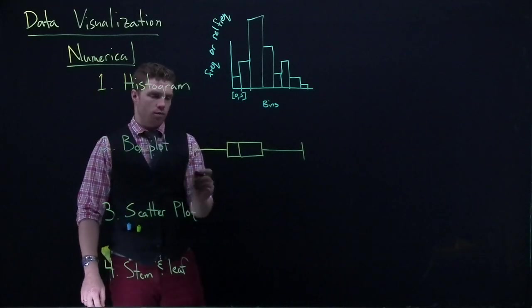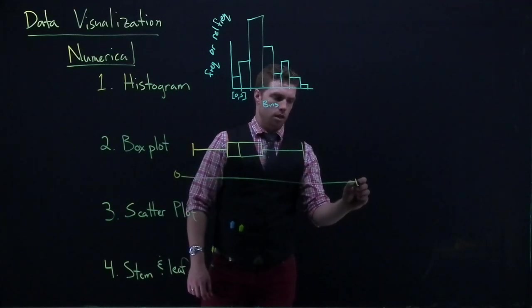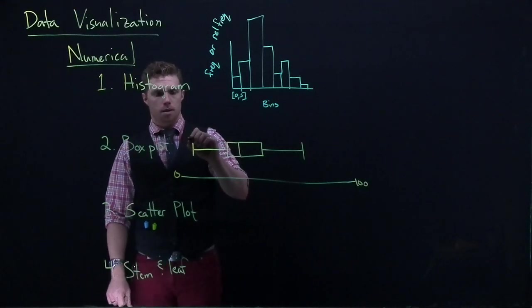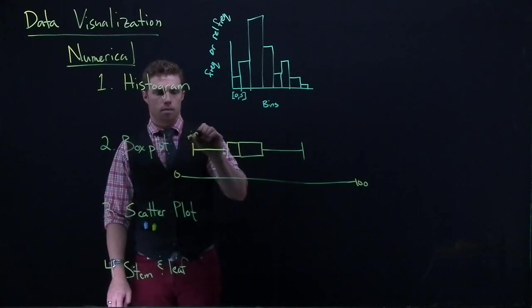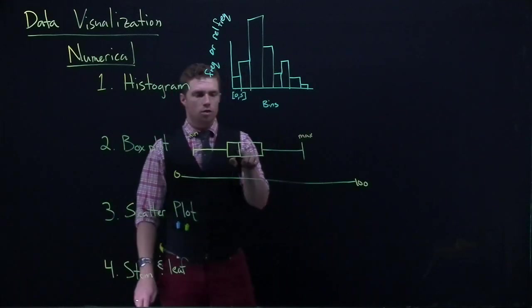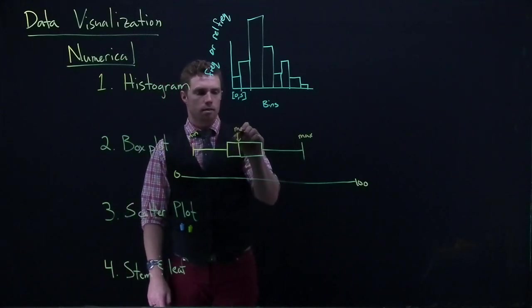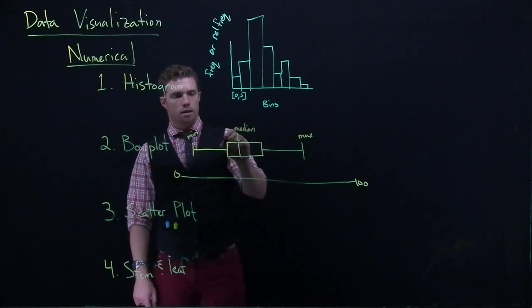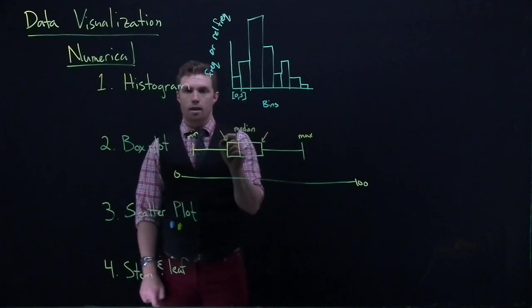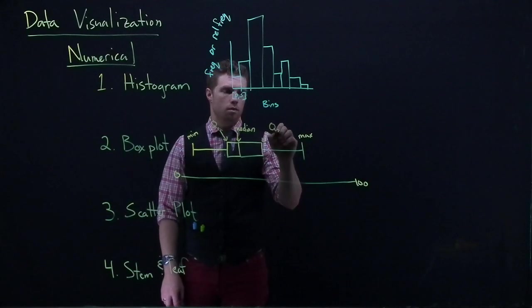So here we'd have some sort of number line. So maybe this is 0, and we're going all the way out to 100. This is our minimum. This is our maximum. And then we have these three values in here. So this value right here is our median. And this guy is called the first quartile. And this one is called the second quartile. And we abbreviate them as Q1 and Q3.